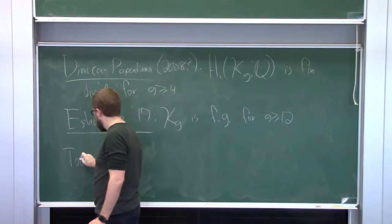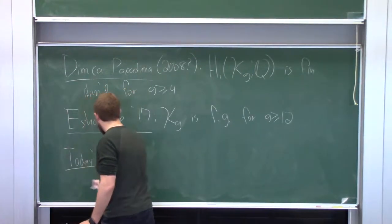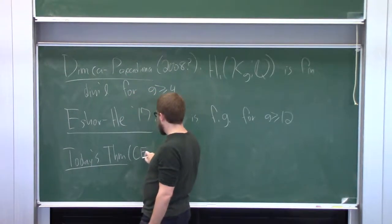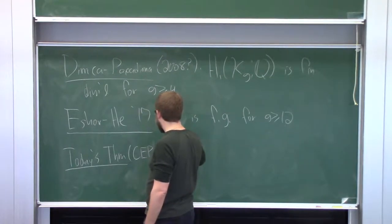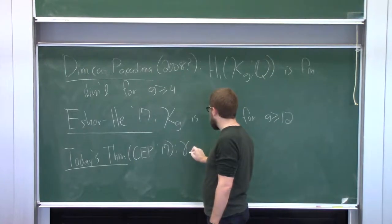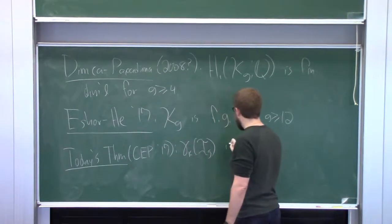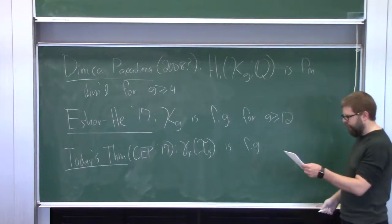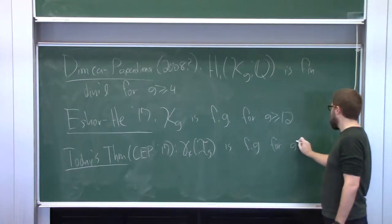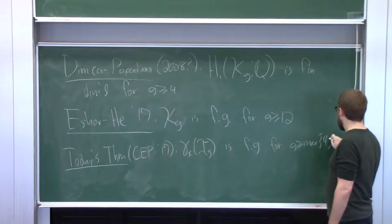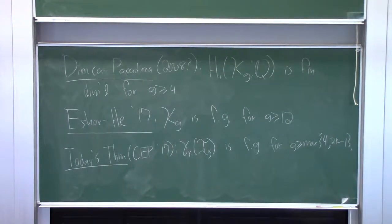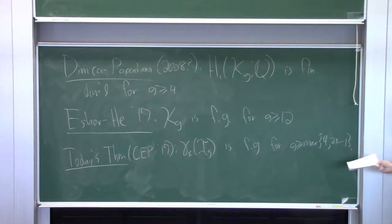Today's theorem — joint with Church, Ershov, and Putman, also 2017 — says that if you look at the lower central series, gamma_k of the Torelli group is finitely generated for G greater than or equal to max(4, 2k-1). So you can go quite deep in the lower central series: if you want to reach the tenth term, it's enough for the genus to be about 19, and those will be finitely generated. We also get that K_g is finitely generated for g at least 4, which I suspect is optimal. Genus 3 is open — I don't know the answer.